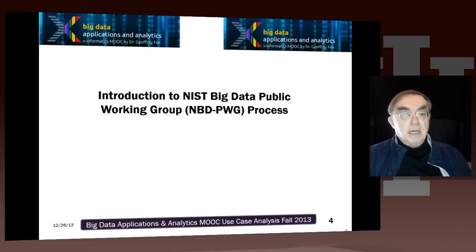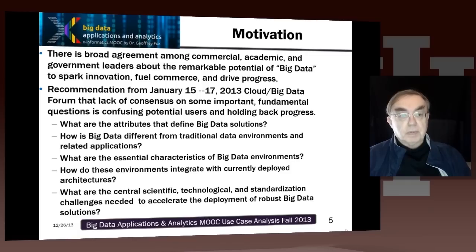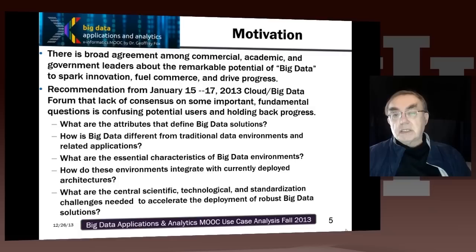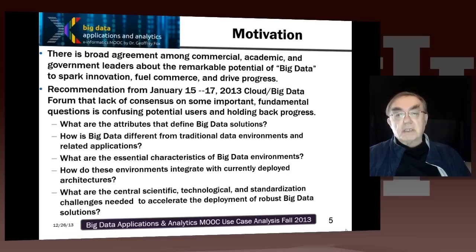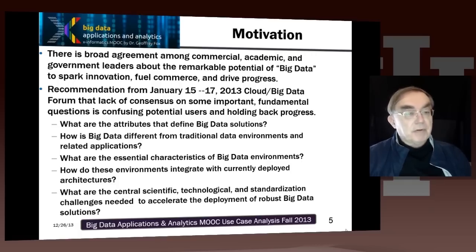So first, we have a discussion of the actual whole process — the NIST Big Data Public Working Group — which was the total activity and had various subgroups. The motivation of the process came from a previous NIST activity centered on clouds, and then they had a forum on January 15th to 17th of 2013, which summarized where they were with clouds. This pointed out that the cloud activity, and other discussions following the identification of big data as a critical issue, raised the question: we don't quite know what big data is.